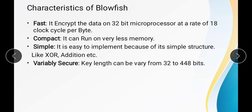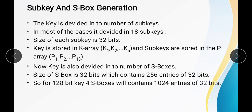The characteristics of Blowfish are: first, it is fast — it encrypts data on a 32-bit microprocessor at the rate of 18 clock cycles per byte. It is compact and can run on very little memory. It is simple and can be easily implemented because of its simple structure using XOR and addition operations. It is variably secured because the key length can vary from 32 to 448 bits.